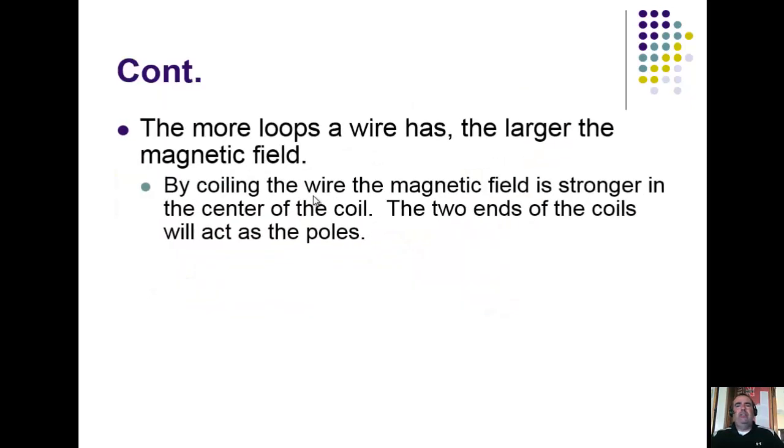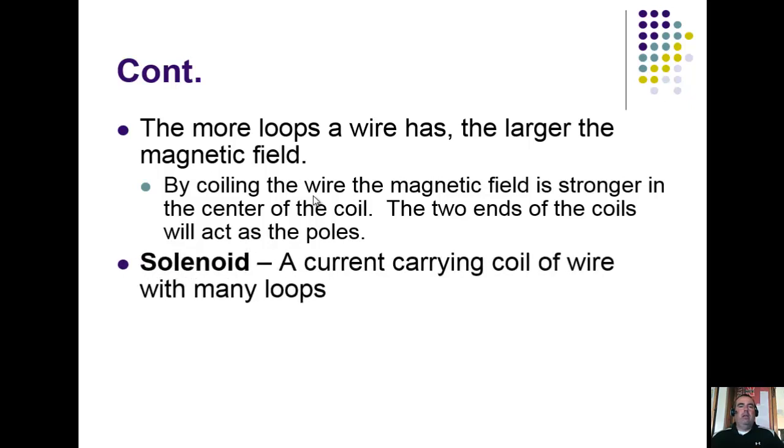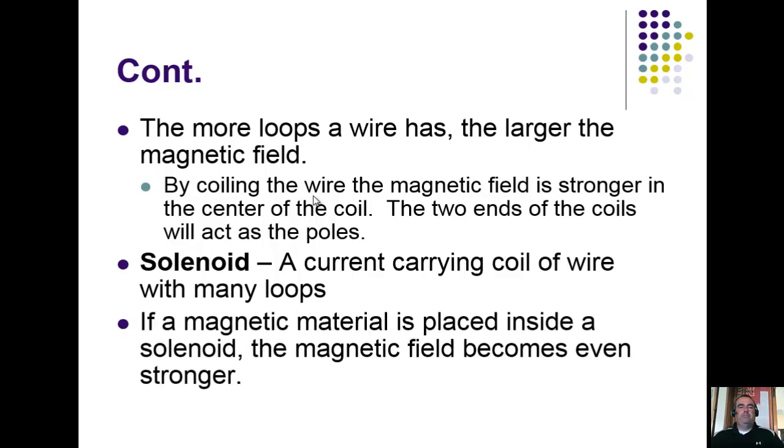The more loops a wire has, the larger the magnetic field. By coiling the wire, the magnetic field is stronger in the center of the coil, as shown on that previous illustration. The two ends of the coils are acting just like your poles of a magnet. This is called a solenoid—a current-carrying coil of wire with many loops. If a magnetic material is placed inside it, like a nail or anything iron-bearing, that magnetic field becomes even stronger.